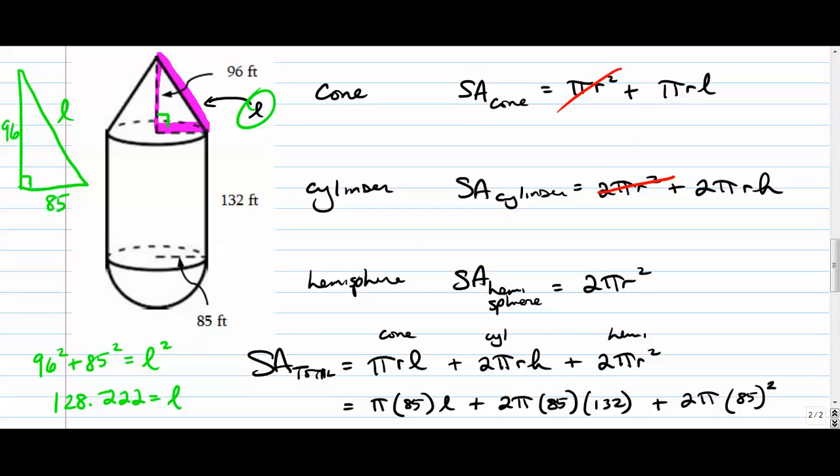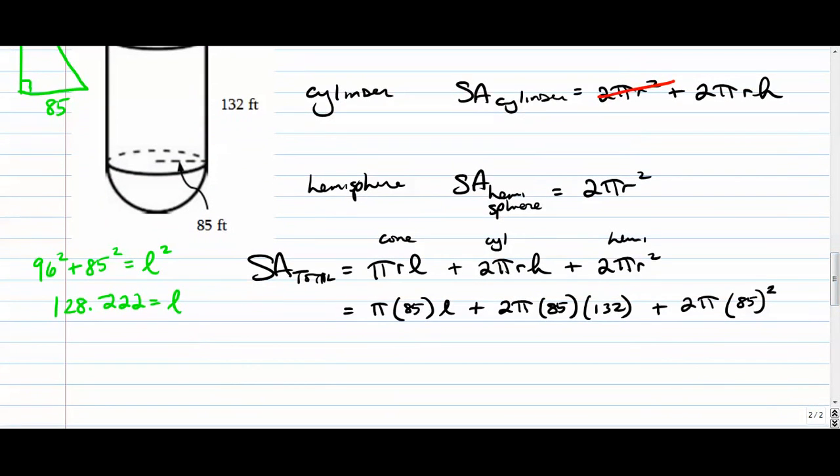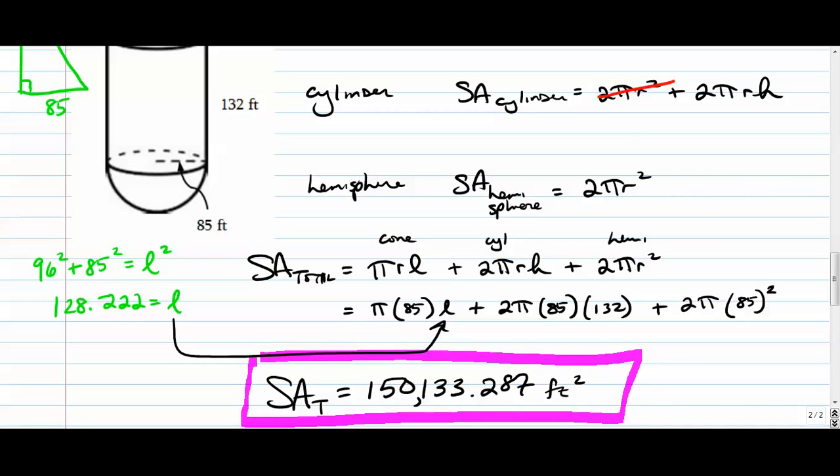So that's what your slant height was right here. You type that in, type that slant height in right there, and enter everything all together, and you get this number: 150,133. And that concludes our surface area composite videos.